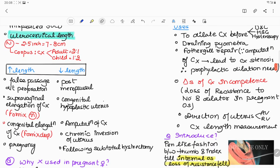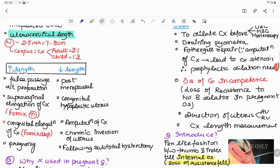Conditions where there is increased uterocervical length are number one when there is false passage due to perforation, number two when there is elongation of supravaginal part of cervix, number three is during congenital elongation of cervix, and number four is pregnancy.